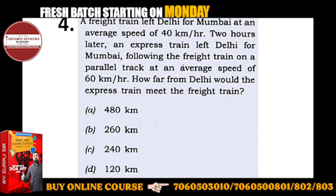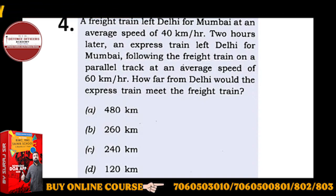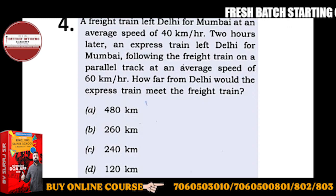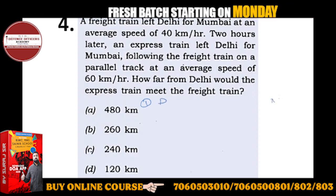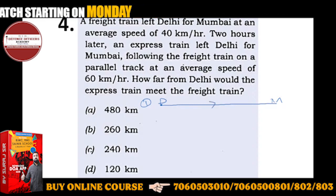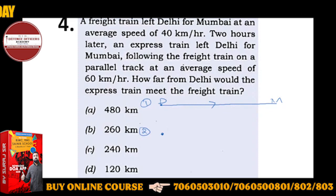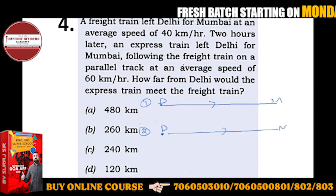To solve this, we'll first draw a diagram. So let's say this is Delhi and this is Mumbai — a train goes from Delhi to Mumbai. In the second condition, another train also goes from Delhi to Mumbai.